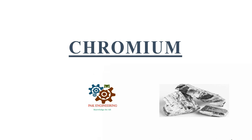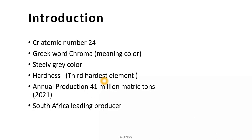Welcome to my channel Park Engineering. In this video I am going to tell you about chromium metal. Chromium is a chemical element having the symbol Cr and an atomic number of 24. Chromium is derived from the Greek word 'chroma' which means color, as chromium compounds are found to be colorful compounds.